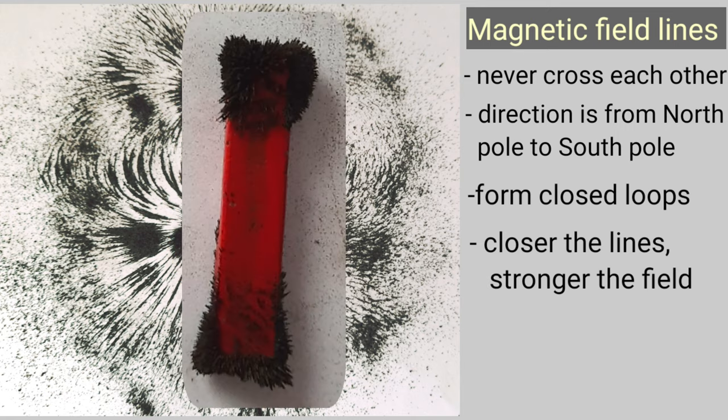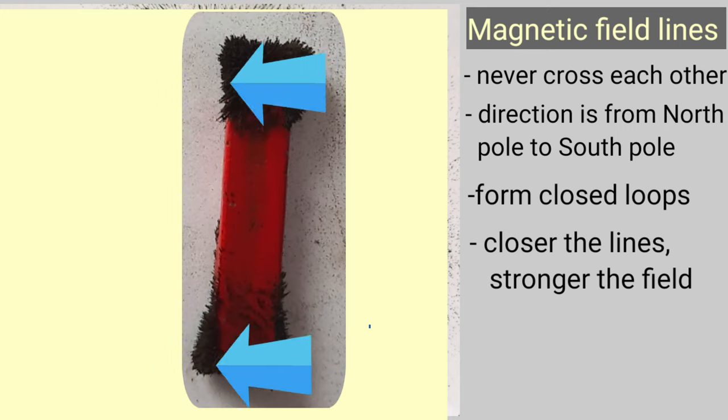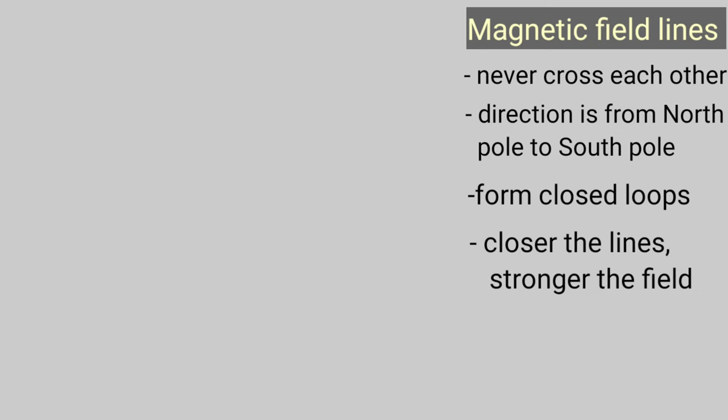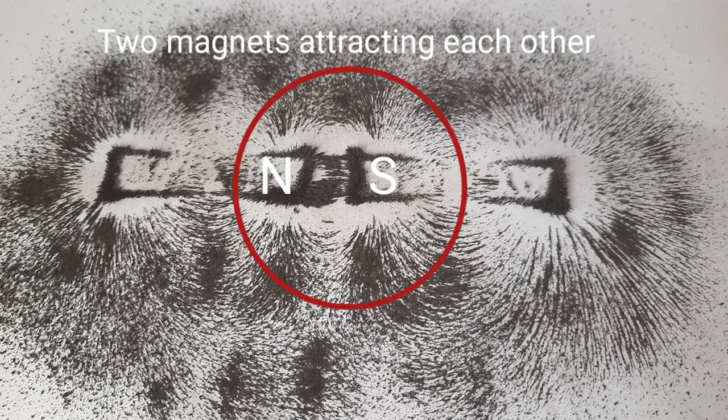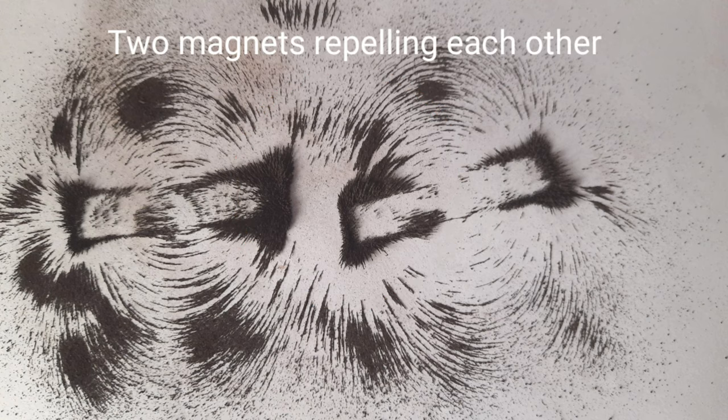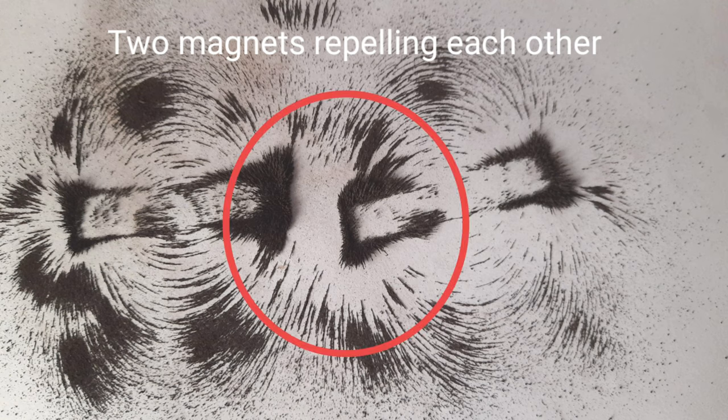That's why you can see more iron filings are sticking at the poles. This image shows a pattern of magnetic field lines of two magnets whose unlike poles are closer. That is, they are attracting each other. See, the field lines of two magnets have come closer between the two magnets. This another image shows how field lines between two magnets move away when like poles are brought together. That is, when like poles repel each other.